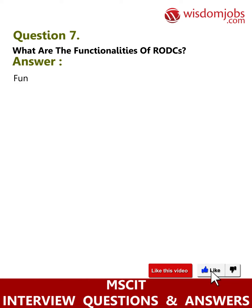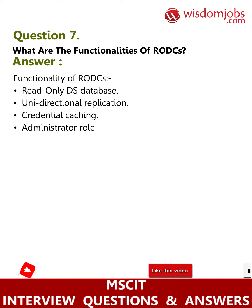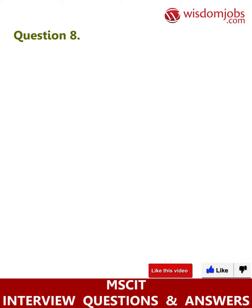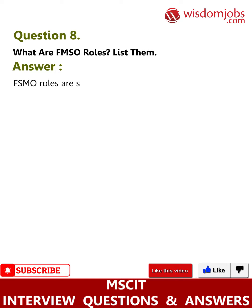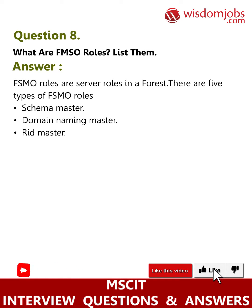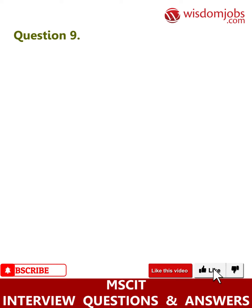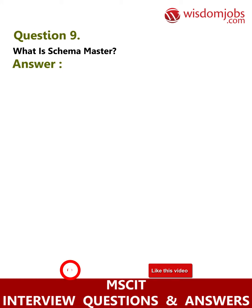Question 7: What are the functionalities of RODC? Answer: Functionalities of RODC include: read-only Active Directory database, unidirectional replication, credential caching, and administrator role separation. Question 8: What are the FSMO roles? List them. Answer: FSMO roles are server roles in a forest. There are five types of FSMO roles: Schema Master, Domain Naming Master, RID Master, PDC Emulator, and Infrastructure Master.